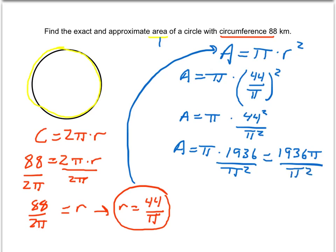But now note, we've got a π up top and π squared down below. So one of those π's would factor out. And the exact area, if one of these π's cancels out, we have 1,936 divided by π. And that would be an exact answer. So we could say it would be that many kilometers squared. That would be an exact answer. So we have our exact answer.